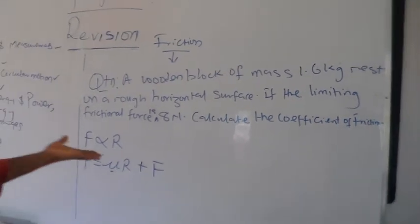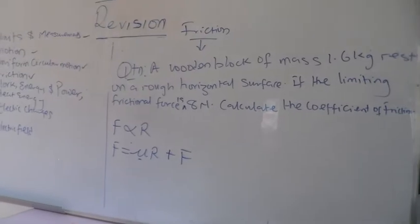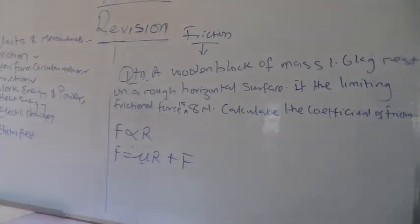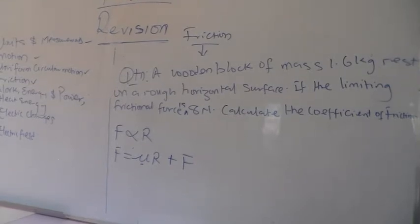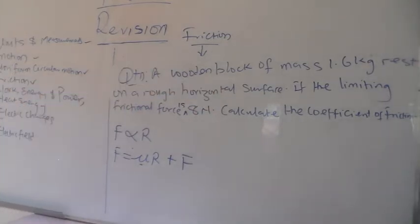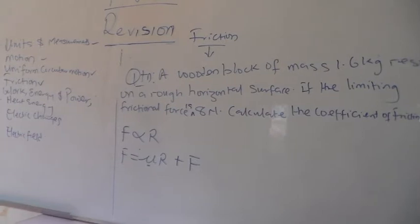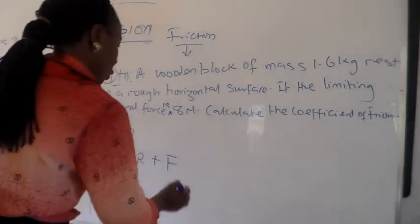Now, in this problem, we don't even need, it is not even an object that needs to be in a constant motion. We have to overcome what is called the static or limiting frictional force before the block of wood can just begin to move on a horizontal surface. So, we are dealing here with the first type of friction, which is the static or limiting friction.